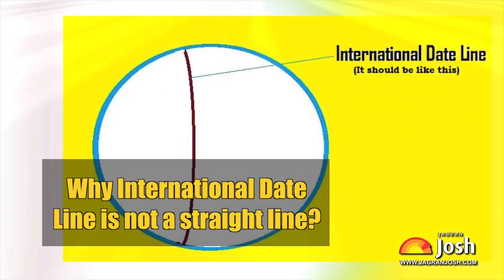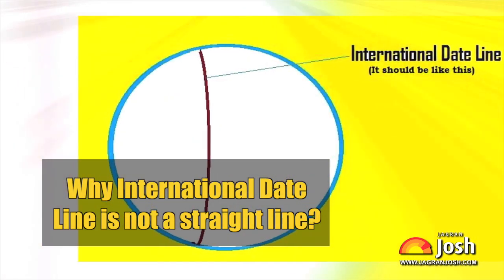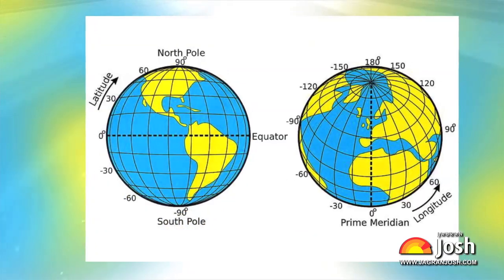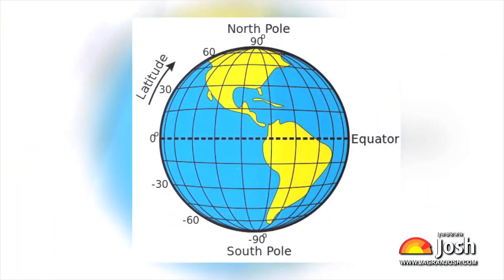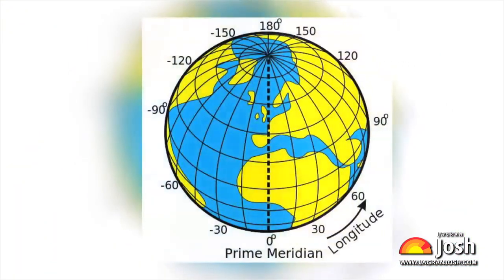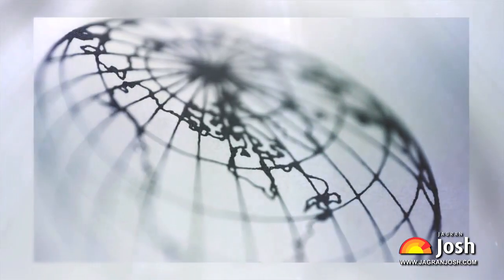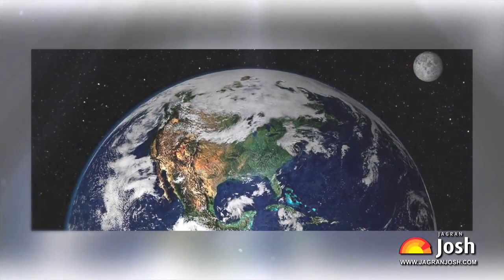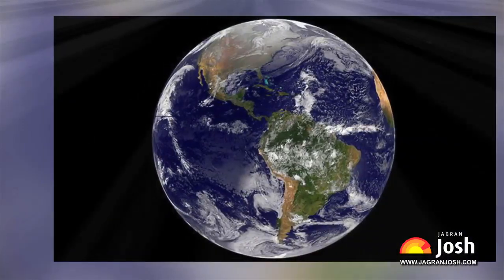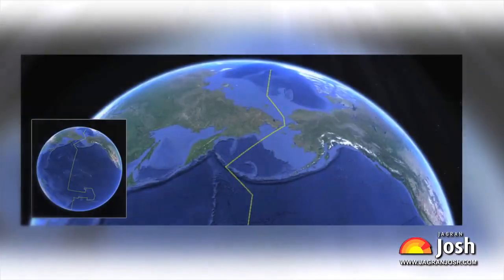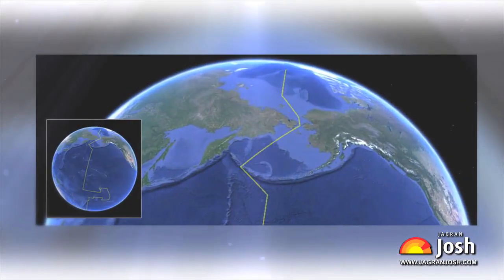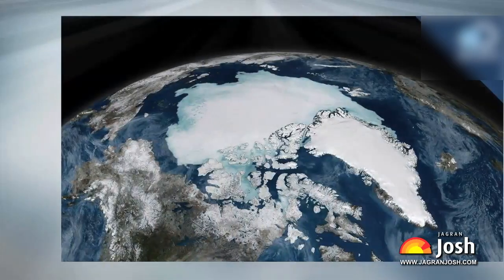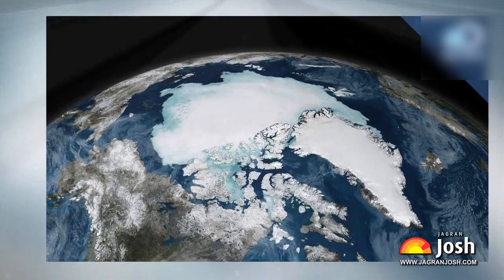Why is the international date line not a straight line? As you know, the earth's shape is spheroid. This makes it difficult to determine time, date, and locate places on the earth. To address this problem, we have to draw some imaginary lines such as longitude, latitude, equator, and prime meridian for navigation and geographical information.